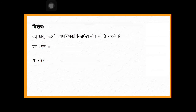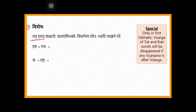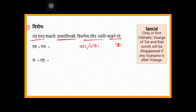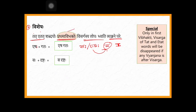Third point in visargasya lopaha: tat and esha shabda — two words: saha and esha. In pratama vibhakti only, if after visarga there is any vyanjana letter, the visarga of these two words will disappear. For example: esha gataha — it should be esha gataha, and it becomes eshagataha, visarga has gone. Then sahadrishtaha will become sadrishtaha. This is important — only in pratama vibhakti.